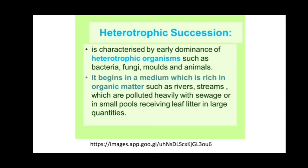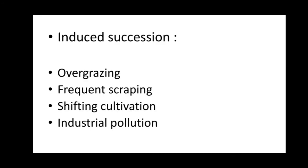Heterotrophic succession is characterized by early dominance of heterotrophic organisms such as bacteria, fungi, molds, and animals. It begins in a medium rich in organic matter, such as heavily polluted river streams or small pools receiving large quantities of leaf litter.